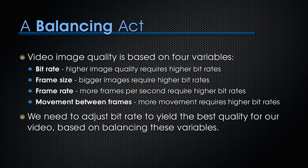Video compression is a balance between higher image and audio quality and smaller file size. Video image quality is based on four variables: bitrate, frame size, frame rate, and movement between frames. Higher image quality requires higher bitrates. Bigger images require higher bitrates. More frames per second requires higher bitrates. More movement between frames requires higher bitrates. With the girls on the merry-go-round, every pixel was different — huge movement between frames. With the woman in front of white, only about 50% of the screen was changing.